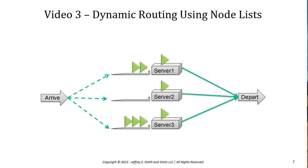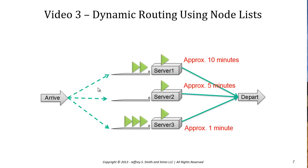In this third video, we'll continue looking at routing of entities, except this time we will use something called NodeList to assist with routing. The sample model we're going to use has arriving entities that can go to one of three servers. We have a typical situation where an entity arrives at a point and decides which server to go to, with pretty significant differences in the processing characteristics of each of the three servers.